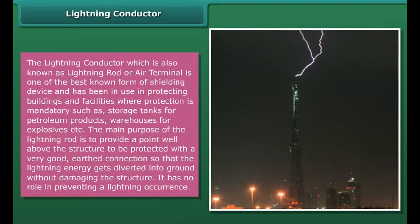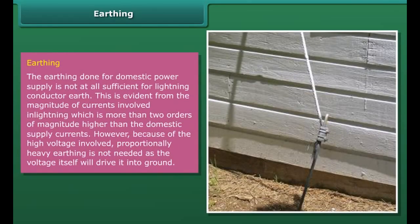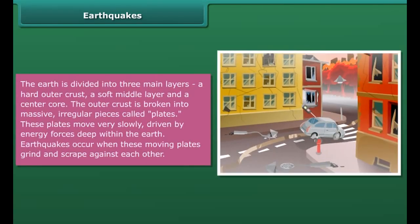Lightning is an atmospheric electrostatic discharge spark accompanied by thunder, which typically occurs during thunderstorms and sometimes during volcanic eruptions or dust storms. From this discharge of atmospheric electricity, a bolt of lightning can travel at speeds of 220,000 kilometers per hour and can reach temperatures approaching 30,000 degrees Celsius (54,000 degrees Fahrenheit).